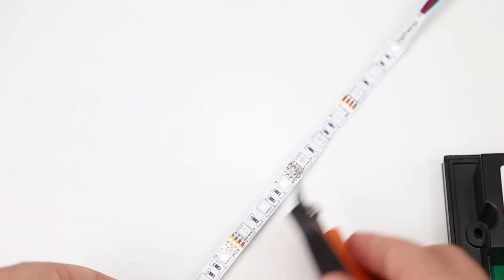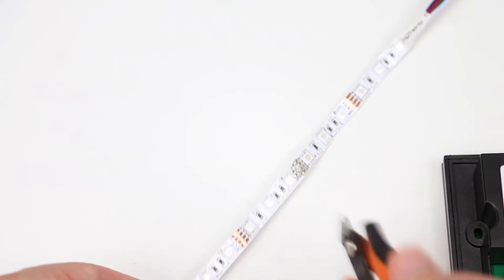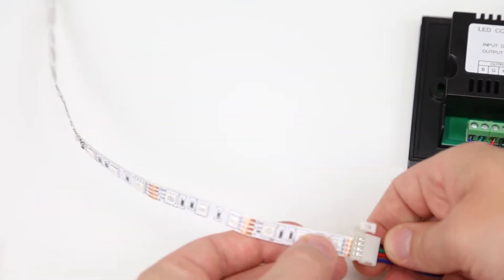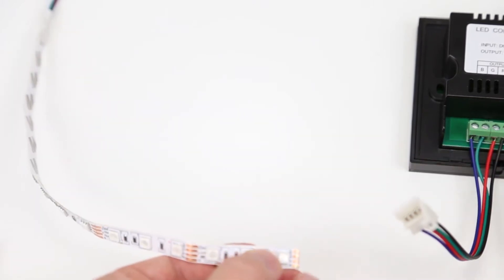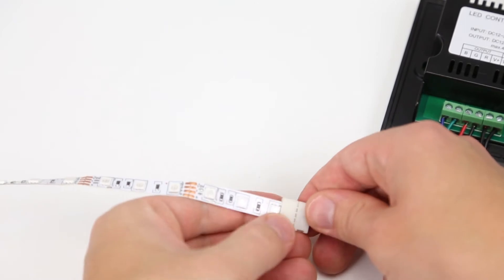Now we need to cut this. So you can see the copper markings here. There are actually dotted lines. So I'm just going to cut one off. Insert in the plug here. This is one of the end of the 5 meter LED strips. So that's why we can use it. So we just plug that in.